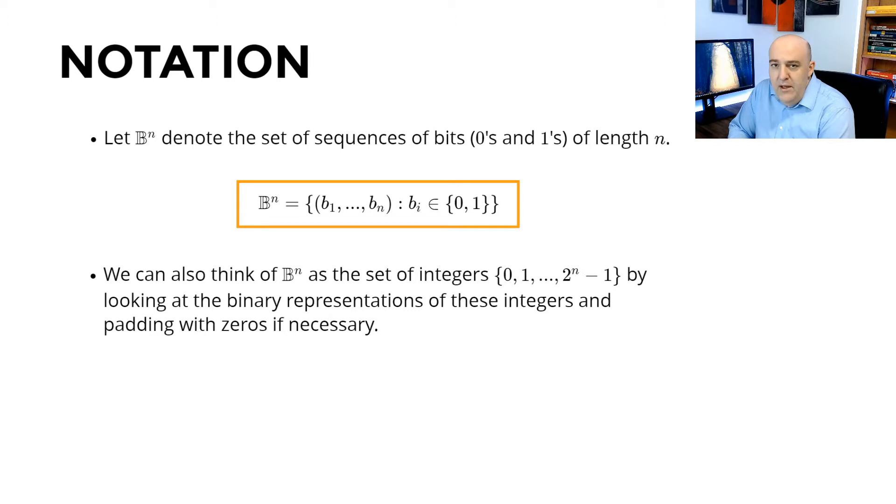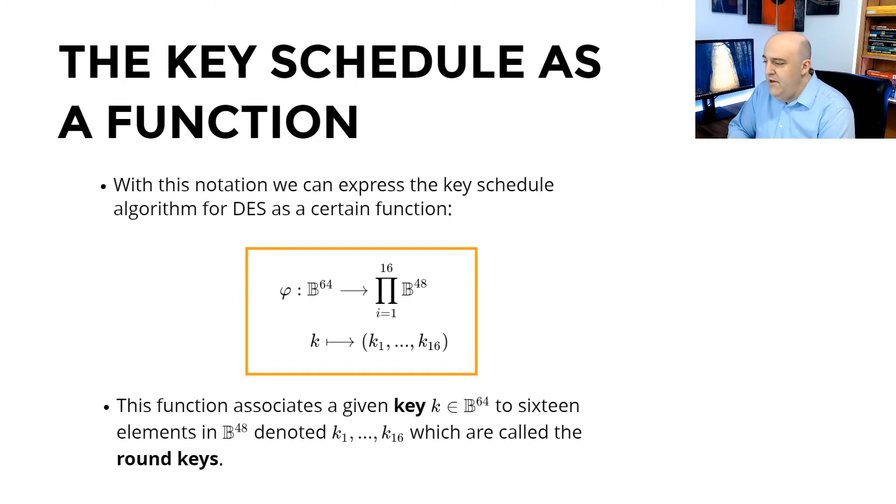So just as a little notation, let B^N be the sequences of N-bits, where each component b_i is either 0 or 1. We can think of these as binary expansions of integers, and the set of all those bit sequences gives rise to integers from 0 up to 2^N-1. With this notation, we can express the Key Schedule algorithm for DES as a mathematical function, which has a domain of 64-bit sequences, and maps to 16-tuples, where each element of the tuple is a 48-bit sequence. So K is 64-bits and gets mapped to the tuple K1 up to K16, where each K_i is 48-bits, and those are the round keys. Our goal of this video is to understand this function.